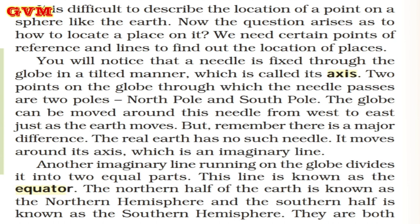Another imaginary line running on the globe divides it into two equal parts. This line is known as the equator. The north half of the Earth is known as the Northern Hemisphere and the southern half is known as the Southern Hemisphere.